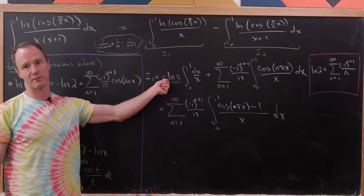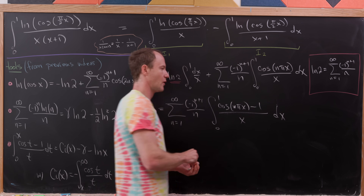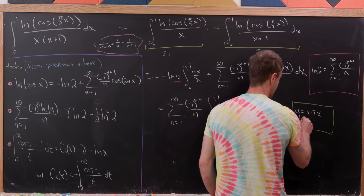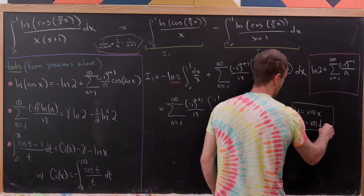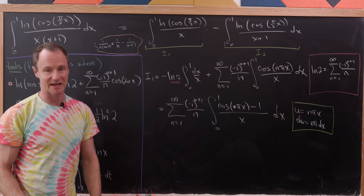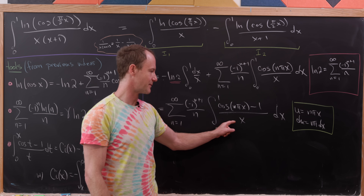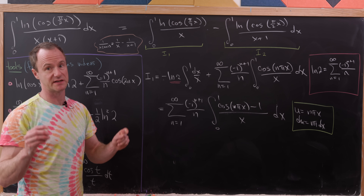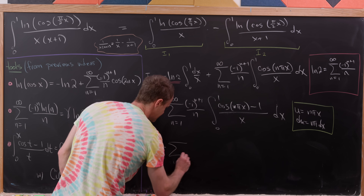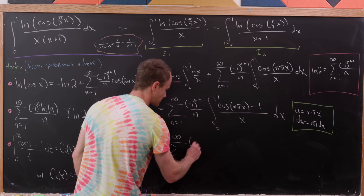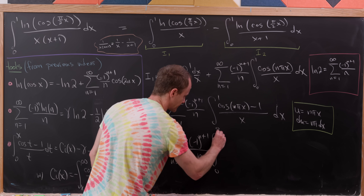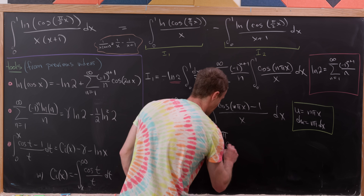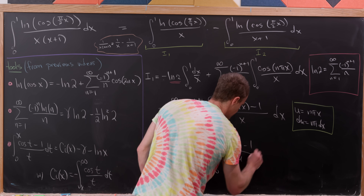We perform the substitution u = nπx, so du = nπ dx. The factors of nπ in the numerator and denominator cancel, and the upper limit changes to nπ. This leaves the sum from n=1 to infinity of (−1)^(n+1)/n times the integral from 0 to nπ of (cos u − 1)/u du.